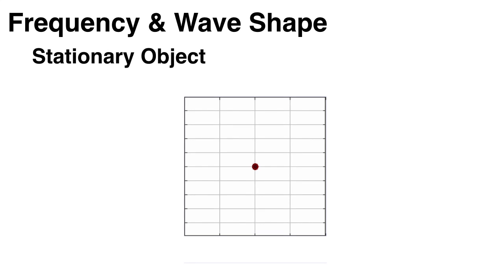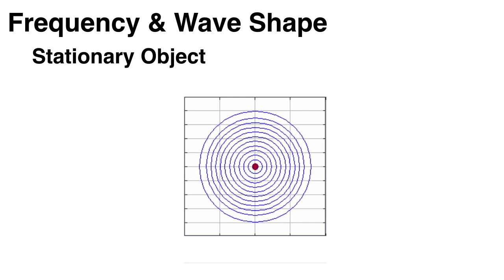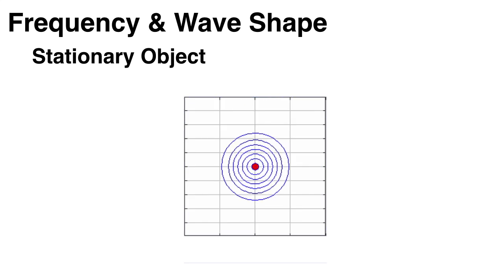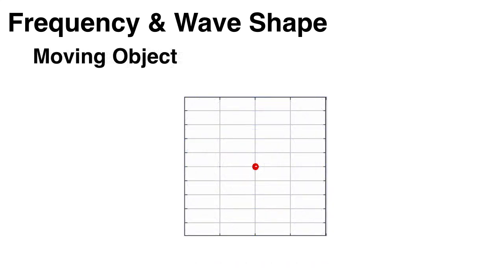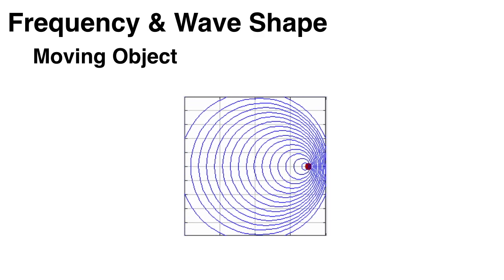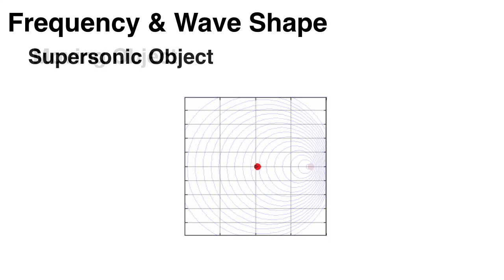This is because the wavelength of the sound waves emitted by the moving object are squashed in front of the object, thus increasing the frequency and the pitch of the sound. And conversely, the wavelength of the sound waves emitted from a moving object are expanded behind the object, thus decreasing the frequency and the pitch of the note.